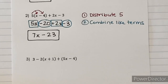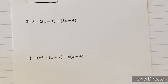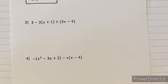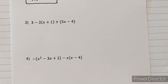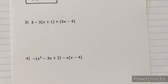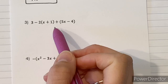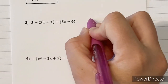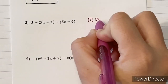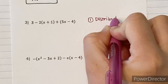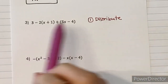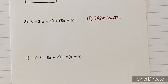Now let's do number three. It looks a bit more intimidating, but it's not hard at all — you do it the same way as one and two. The first thing I notice is that we have two sets of parentheses. You treat them the same way, so the first thing we need to do is distribute. This time we have two numbers, so we'll distribute twice.